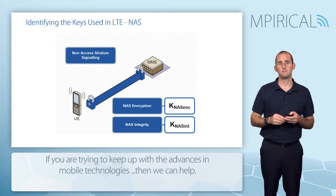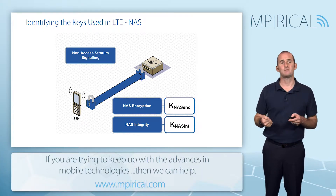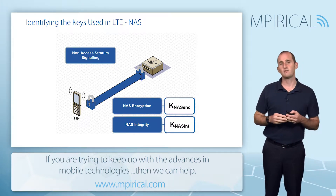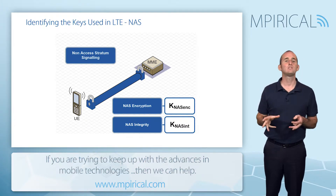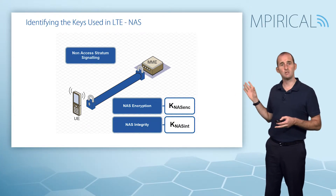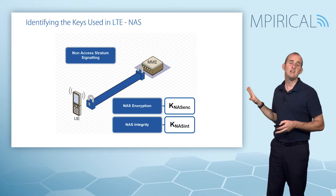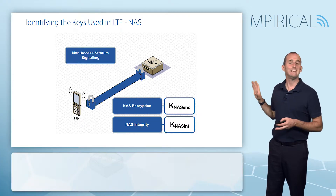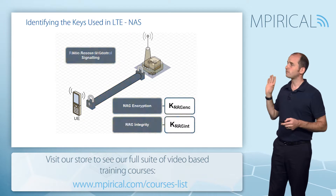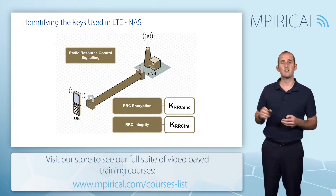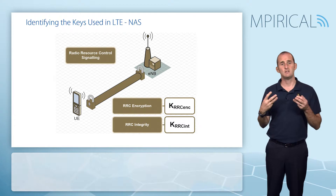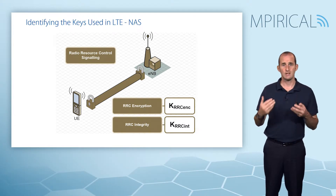To begin with, what keys are actually utilized? For NAS signaling security, we encrypt and integrity check our traffic. As a consequence of that we need two separate keys: a key for NAS encryption and a key for NAS integrity checking.